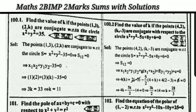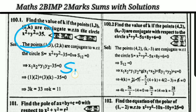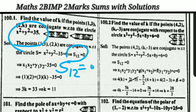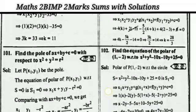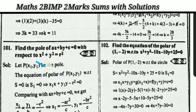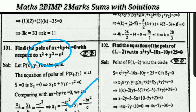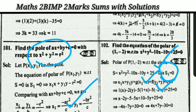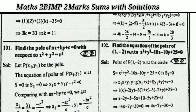Next: find the value of k if the points (1, 3) and (2, k) are conjugate points with respect to the circle. The condition for conjugate points is S₁₂ = 0. Similarly find k for another conjugate points problem. Also find the pole of a line and the equation of the polar — both use the formula S₁ = 0, which is also used for the equation of tangent and chord of contact.